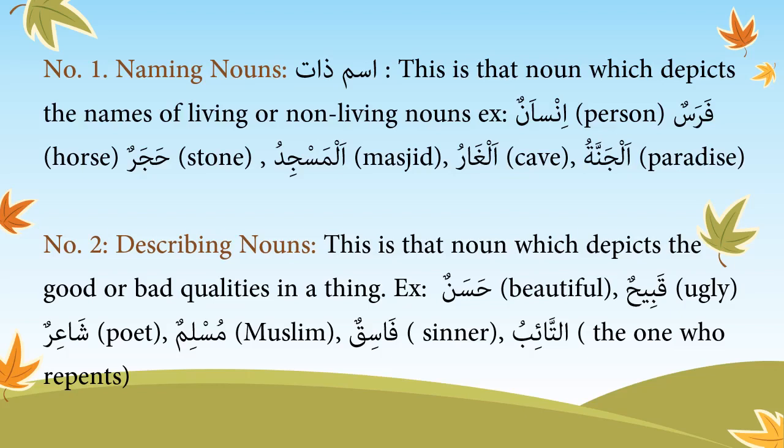Number 2: Describing nouns, or ism-i-sift. This is that noun which depicts the good or bad qualities in a thing. Examples: hasanun (beautiful), qabihun (ugly), sha'irun (poet), muslimun (Muslim), fasikun (sinner), at-tayibu (the one who repents).